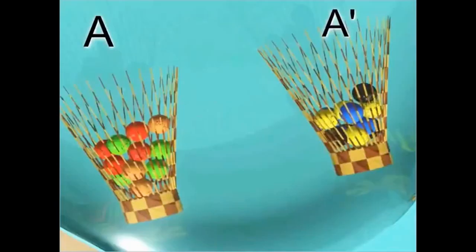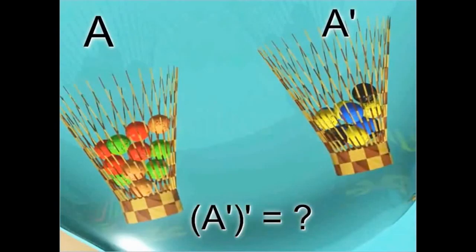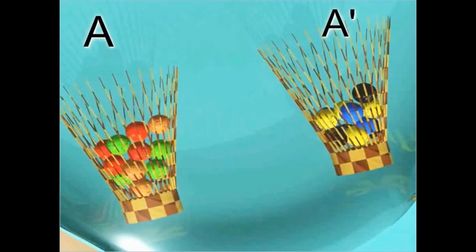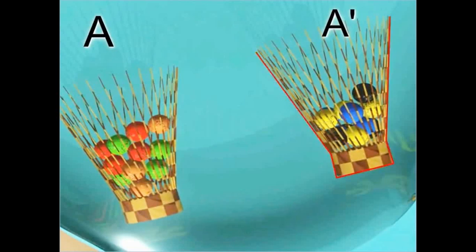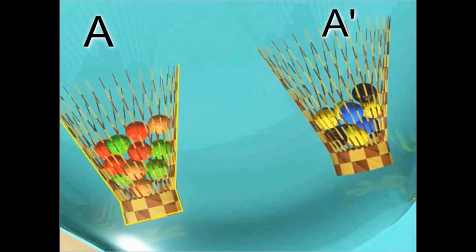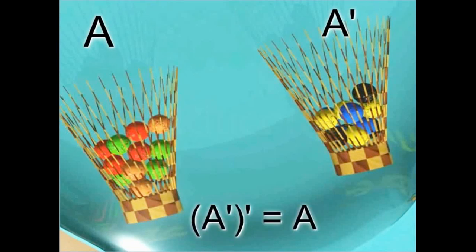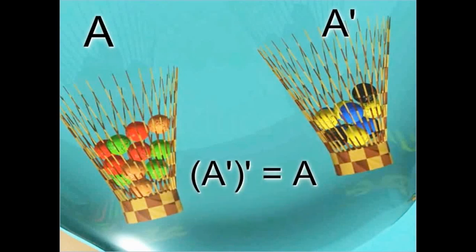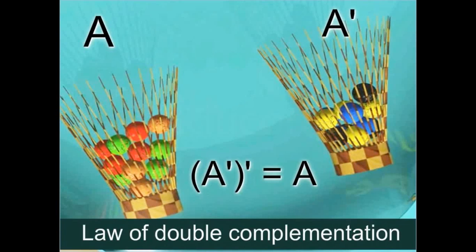Let us see what happens if complement of A complement is taken. Complement of A complement consists of all the marbles other than marbles of A complement, which is nothing but set A. Thus, complement of a complement set is the set itself. This property is known as the law of double complementation.